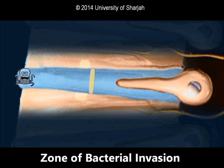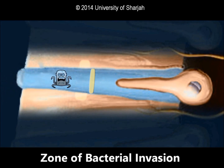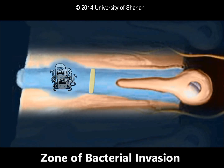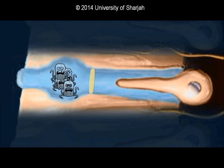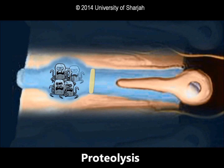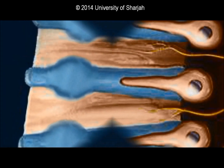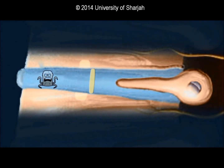The third zone is the zone of bacterial invasion, where the tubules are invaded by bacteria which multiply within the tubule lumen. The bacteria decalcify the dentin with acid and dissolve the proteins within the tubules — a process called proteolysis. The walls of the tubules are softened by proteolytic activity, and some may be extended by the increasing mass of multiplying bacteria.